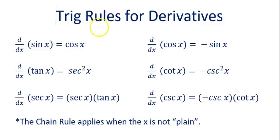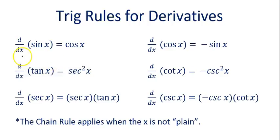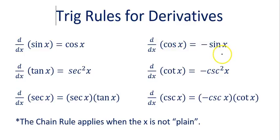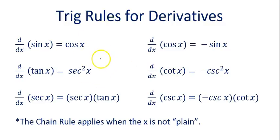This lesson covers only trig rules for derivatives — the shortcut rules for the six trig functions. The derivative of sine of x is cosine of x. The derivative of cosine of x is negative sine of x. Be careful with that because this one's positive and this one's negative — they feel like the reverse of each other, so be careful with your signs.